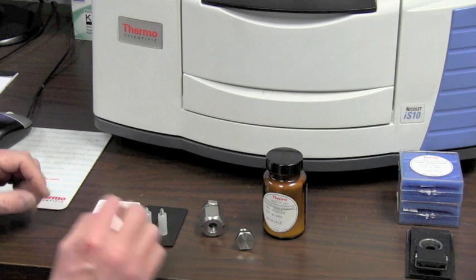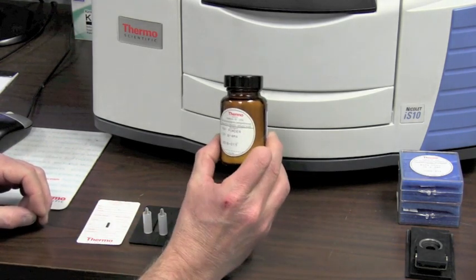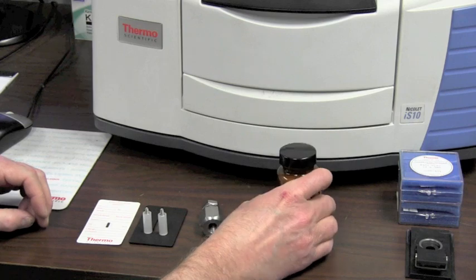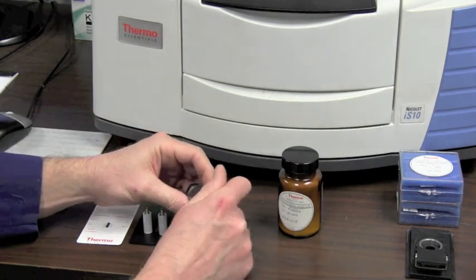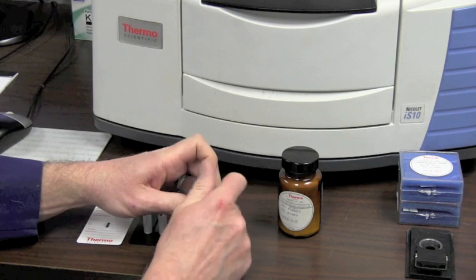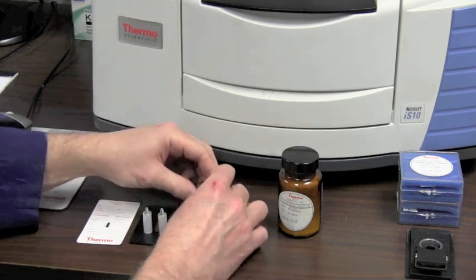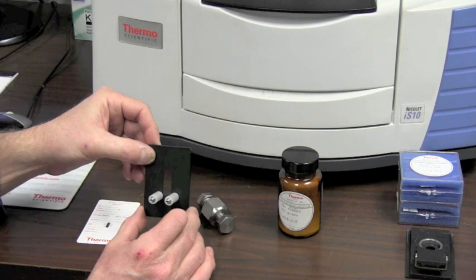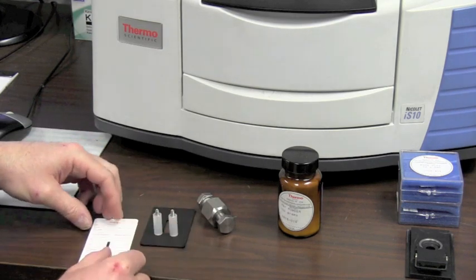There are several different ways to get the sample into the FTIR. One is using potassium bromide along with a powdered sample, screw it together and press it into a pellet, and then we put that pellet on the rack that will go into the light path and we shine the light directly through there.